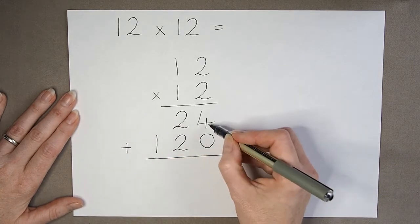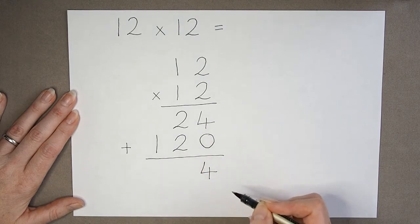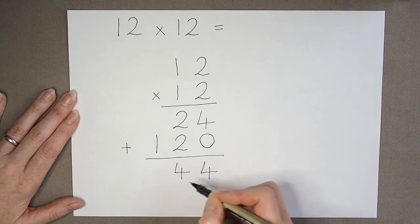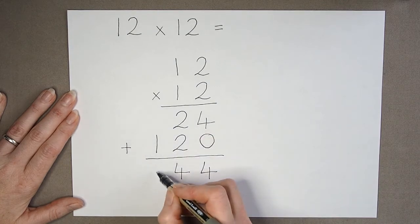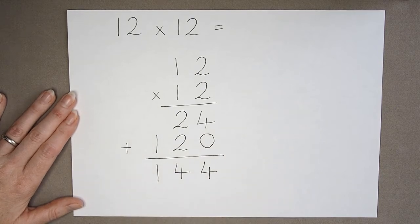So it's column addition. 4 add 0 is 4, 2 add 2 is 4, 1 add nothing is 1. So my answer, as we expected, is 144.